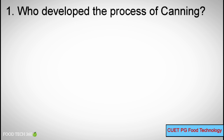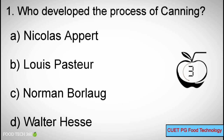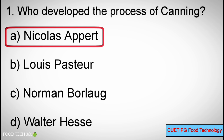Q1: Who developed the process of canning? A. Nicolas Appert, B. Louis Pasteur, C. Norman Borlaug, D. Walter Hesse. Correct answer: A. Nicolas Appert.